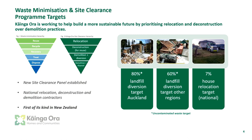The first target across deconstruction and demolition is the 80% landfill diversion target. I will talk about what we achieved last financial year in relation to that target — that's in our biggest city, Auckland. As we go through the other parts of our country, the target was lowered because of different infrastructure capability, but we've got to start somewhere — that is 60% landfill diversion. The last target is the house relocation target, which is 7%.